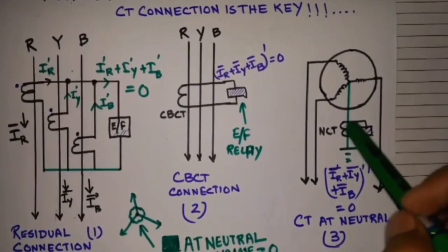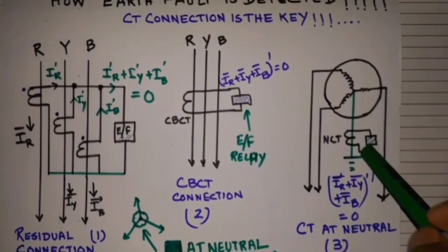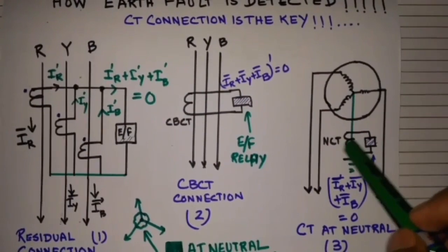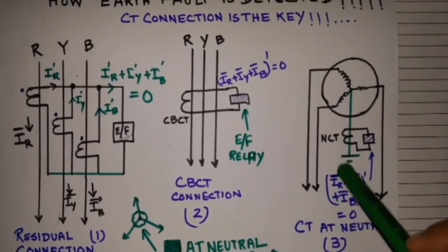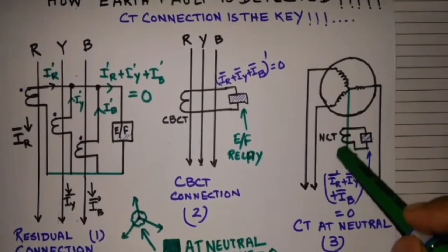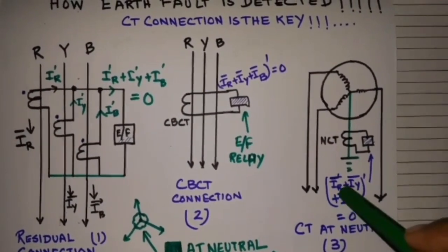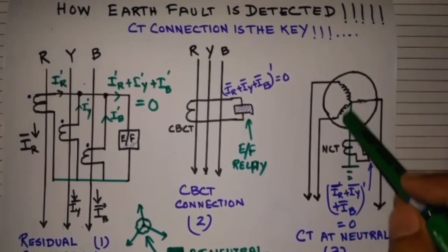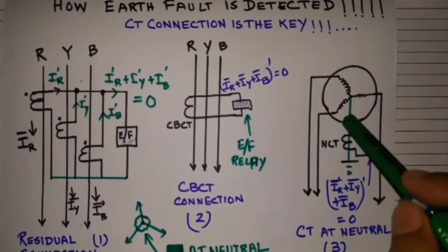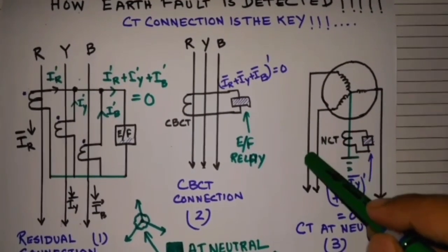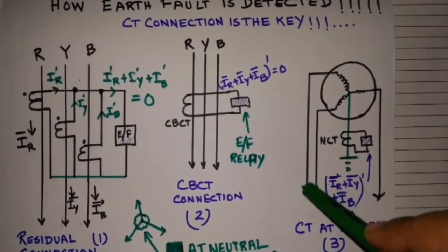Now let us see the NCT connection. Here the relay is connected through the neutral CT. The neutral also, in the neutral, the current flow is also the sum of three phases, IR, IY, IB, which is zero for normal balanced system.